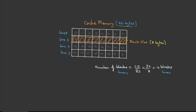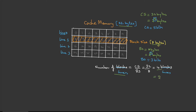Going back to the previous slide, the cache size is given as 32 bytes. We can write this as CS = 32 bytes, which is 2 to the power 5, so we need 5 bits to uniquely identify data items in the cache — these are the cache address bits. The block size is 8 bytes, which is 2 to the power 3, so we need 3 bits for block offset, also called line offset. The number of lines is 4, which is 2 to the power 2, so we need 2 bits for cache index.